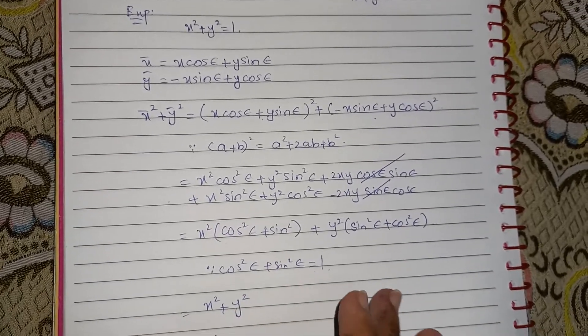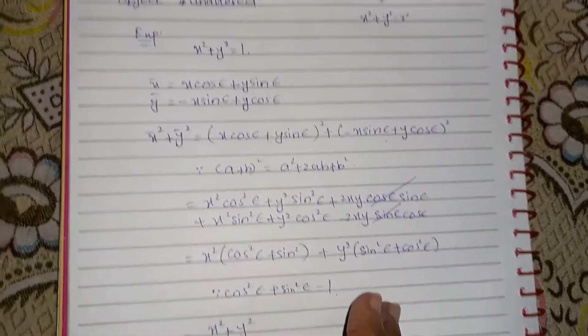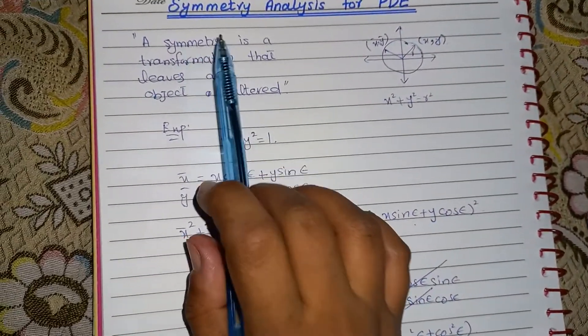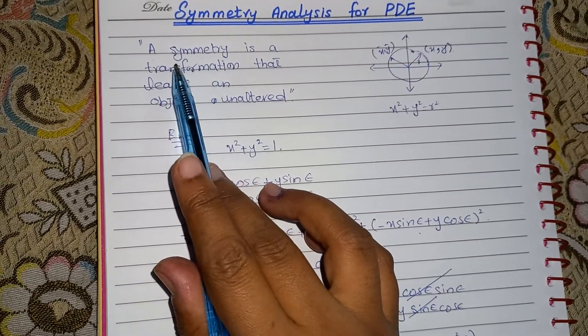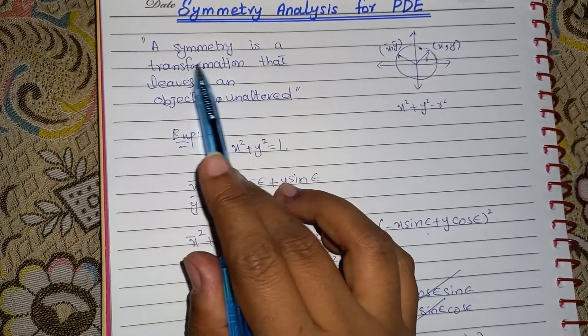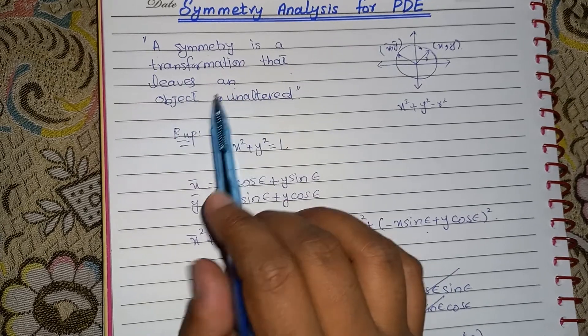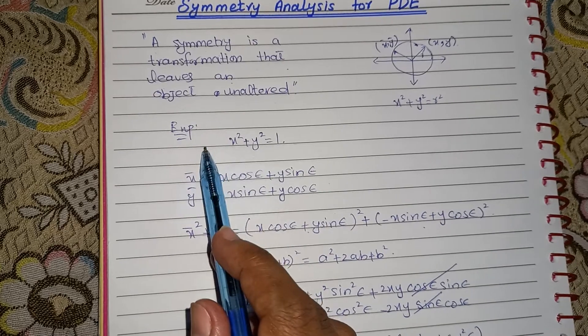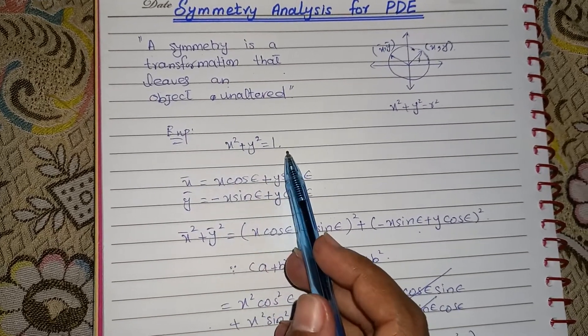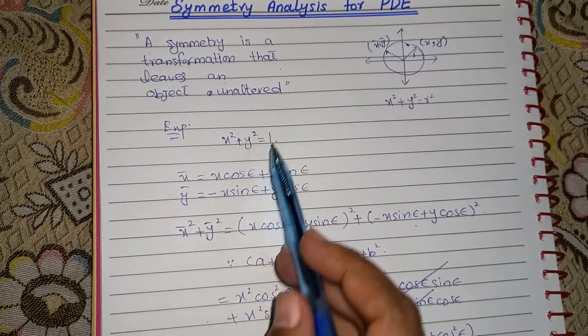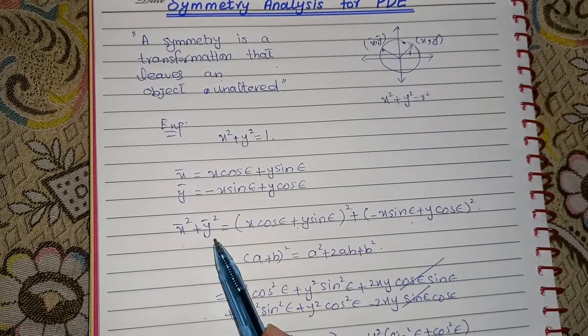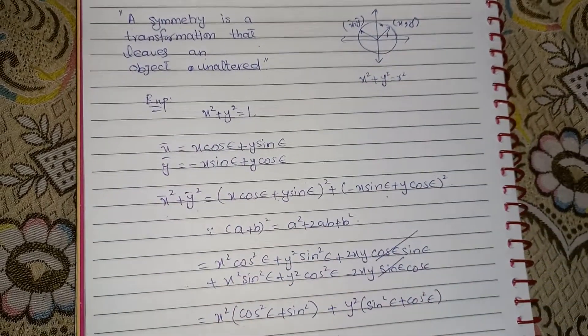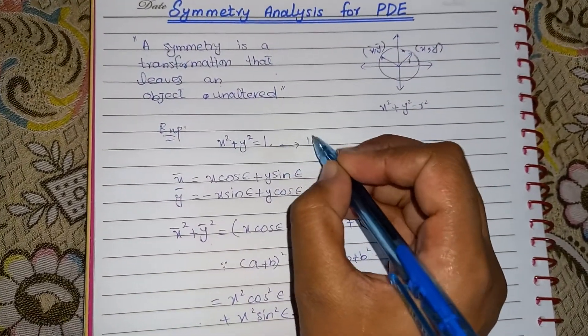Now students, after simplifying this, what we get an idea is that, as I can explain again from the definition, a symmetry is a transformation that leaves an object unaltered. Now we have a transformation. And here the object is our given circle. And I have substituted these two transformations here. And after substituting, I get the same result as given in equation number 1.